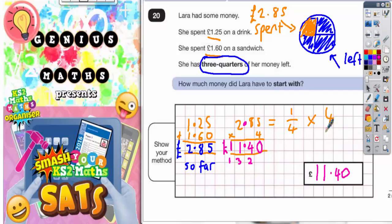Just to recap that. The money she spent so far is £2.85 on the drink and the sandwich. But she had three quarters left. So the £2.85 must be the one quarter that she spent.